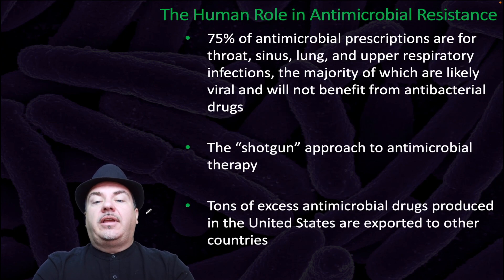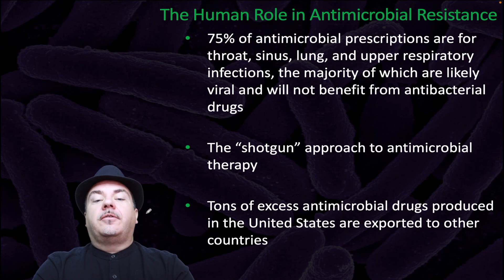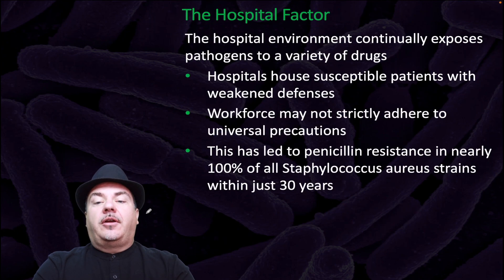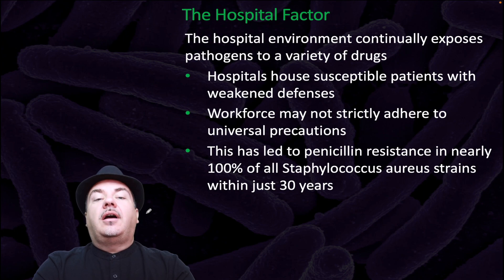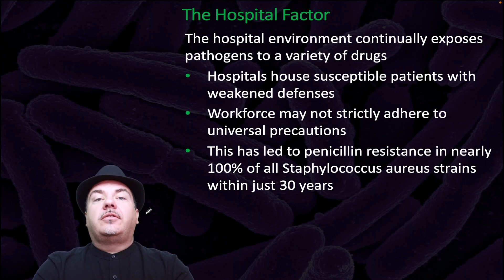What is the human role in antimicrobial resistance? About 75% of antimicrobial prescriptions are for throat, sinus, lung, and upper respiratory infections, the majority of which are likely viral and will not benefit from antibacterial drugs. The hospital environment continually exposes pathogens to a variety of drugs and houses susceptible patients with weakened defenses. The hospital workforce may not strictly adhere to universal precautions, and this has led to penicillin resistance in nearly 100% of all Staphylococcus aureus strains within just 30 years.